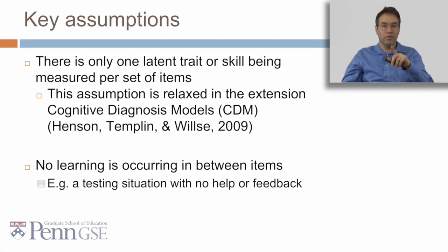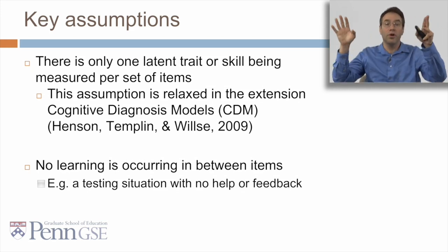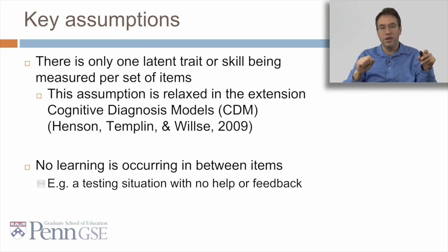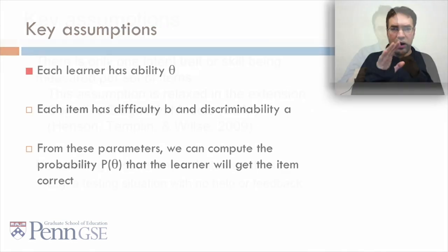Now IRT makes some key assumptions. The first, and kind of the most controversial, is that there's only one latent trait or skill being measured per set of items. This assumption is relaxed in the extension cognitive diagnosis models, but in core IRT there's just one skill, one general ability. Another key assumption, that's particularly questionable for online learning, is that no learning is occurring in between items. In other words, you have a testing situation with no help or feedback.